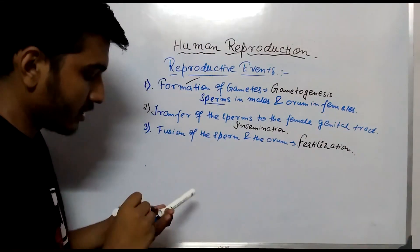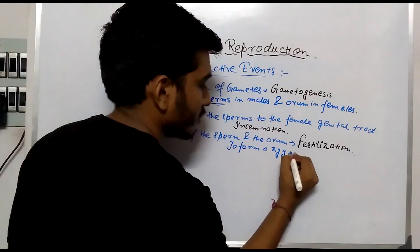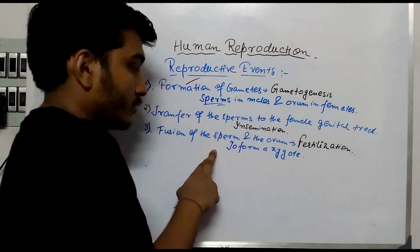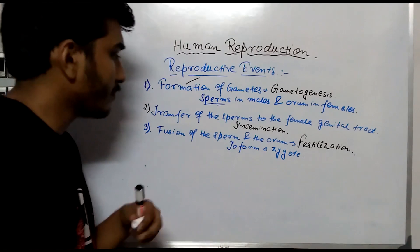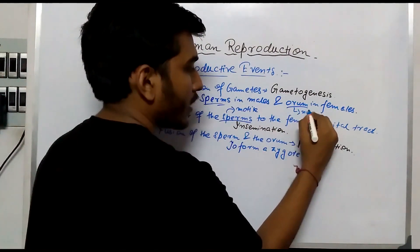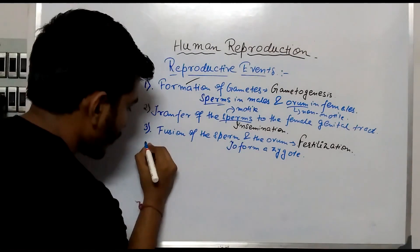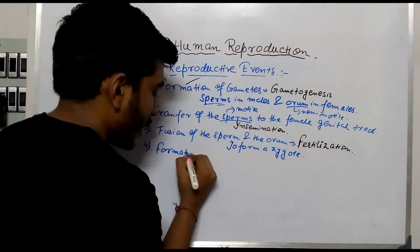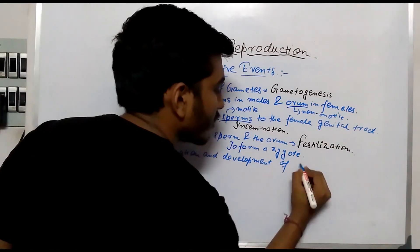What is the end result of fertilization? The end result of fertilization is to form a zygote. So if asked what fertilization means, you write: the fusion of the male sperm with the female ovum to form a zygote. One important point: sperms are motile, whereas the female ovum is non-motile. Fourth point is the formation and development of the blastocyst.